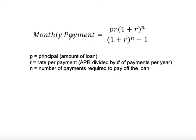Our monthly payment formula starts with P, the principal amount. That's the purchase amount after we've subtracted the down payment. We then multiply by R, which is not the APR itself — R is the APR divided by the number of payments per year. Typically loans have monthly payments, so we divide by 12, but if you make bi-monthly payments you'd divide by 24. Work this out with your lender.